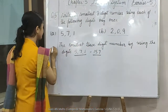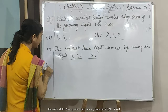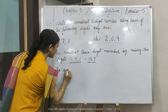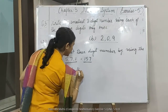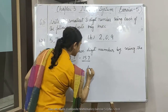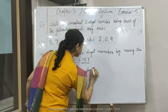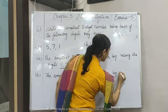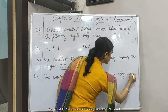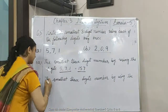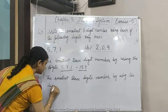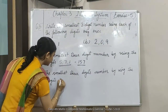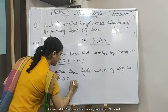इसी तरीके से next करके देखें — यह हो गया आपका A। B के लिए, आप फिर लिखेंगे: the smallest 3-digit number by using the digits — digits कौन सी हैं: 2, 0, 9।